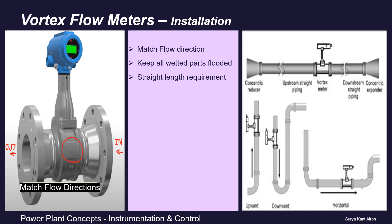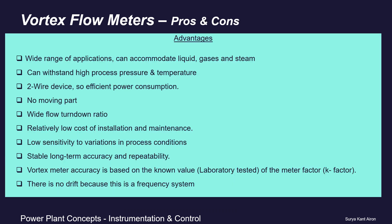As a rule of thumb, if the recommended minimum straight length is 10D upstream and 5D downstream, it is desirable to double these lengths for better accuracy — that is 20D upstream and 10D downstream.